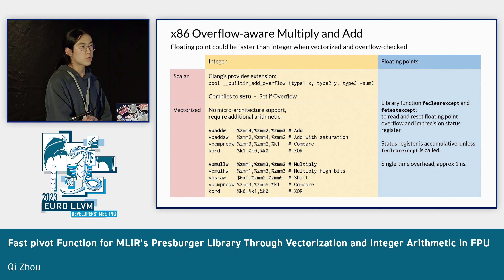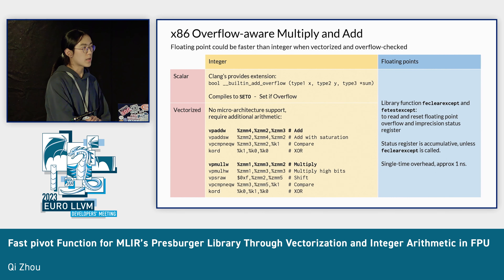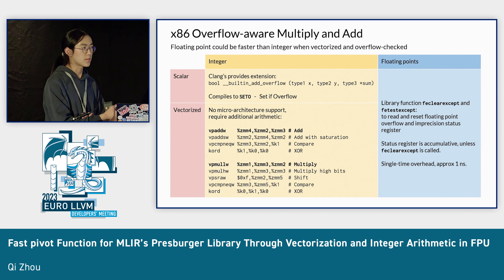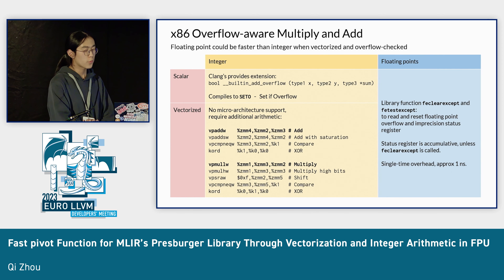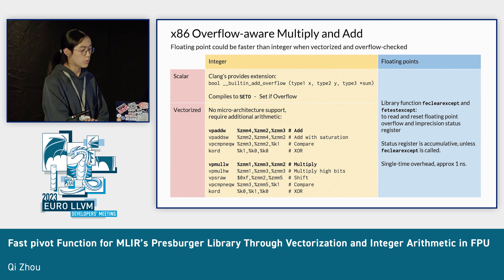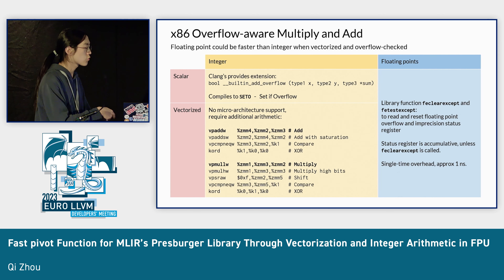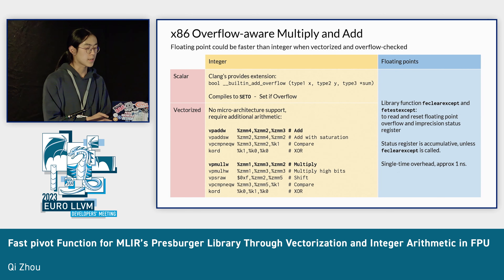This is not the case in modern architectures, as execution units are fully pipelined. For example, in the first cycle when the first instruction gets dispatched to the execution unit, in the second cycle it can move to the second phase of the pipeline and the first phase is empty, so the second instruction can be dispatched in the second cycle. Therefore the 100th instruction can be dispatched on the 100th cycle and finishes on the 104th cycle — the throughput of both integer and float are approximately the same.